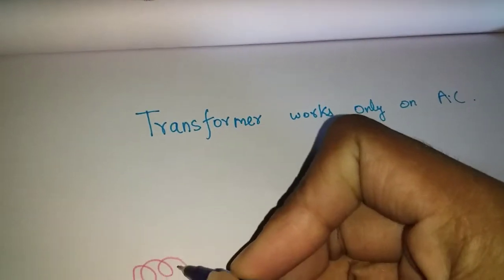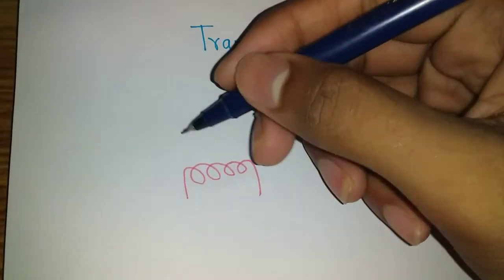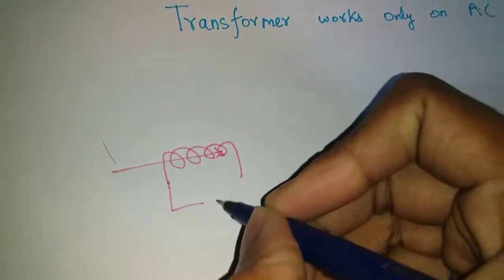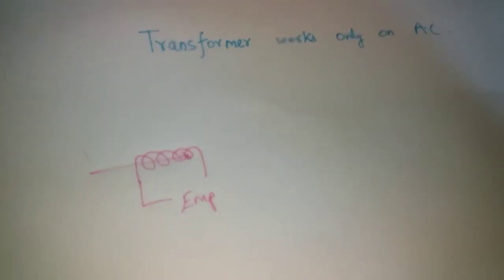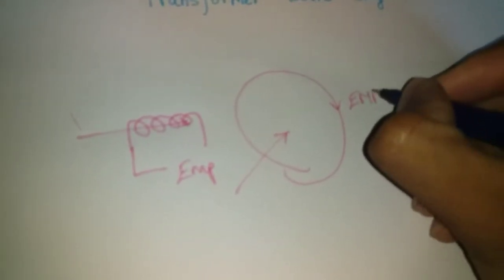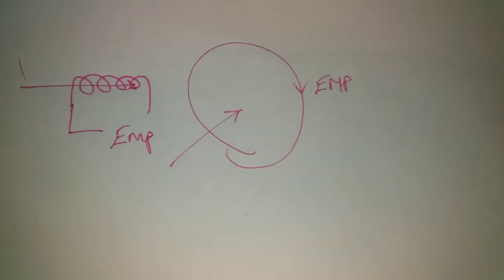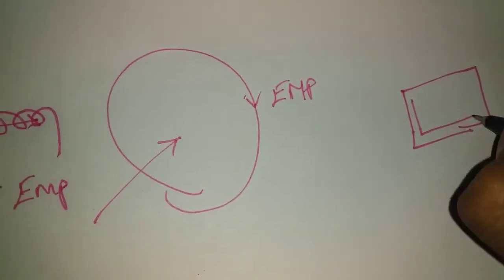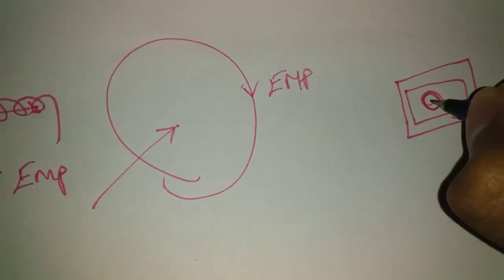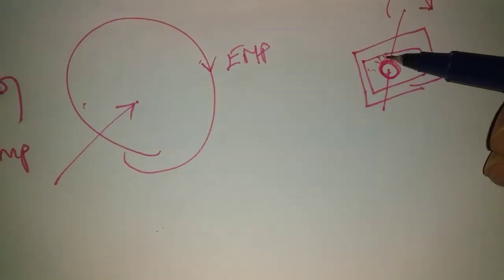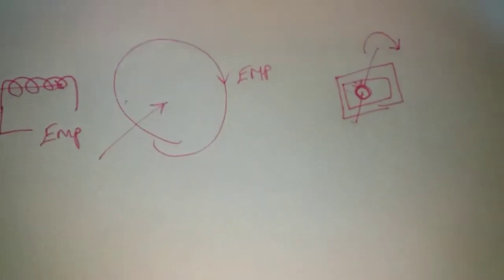This is a copper coil. This is a magnetic field. This is the AC current. If you want to use the motor and generator, there is a magnetic field. There is a copper coil or a closed surface. If you rotate the magnetic field, we will generate the current. This is the transformer.